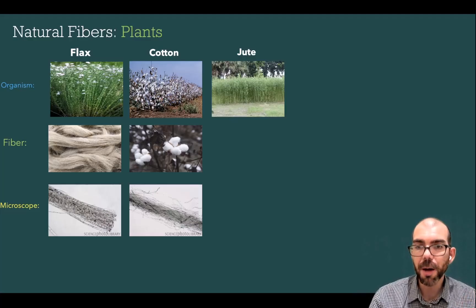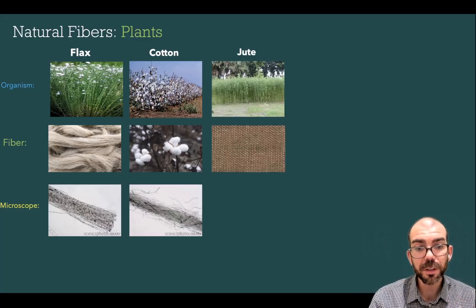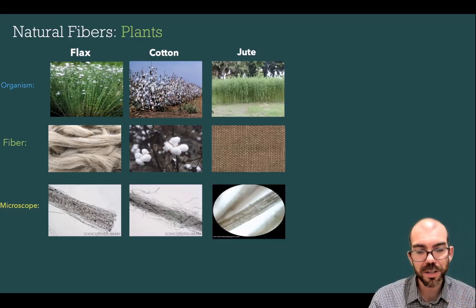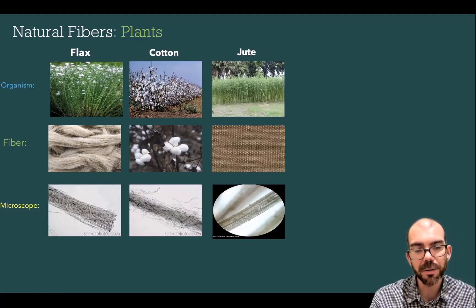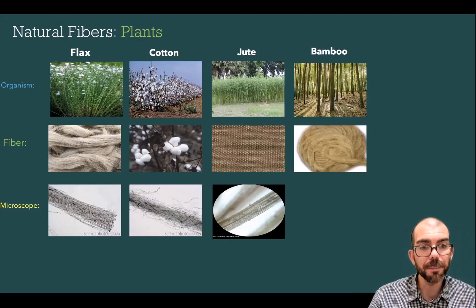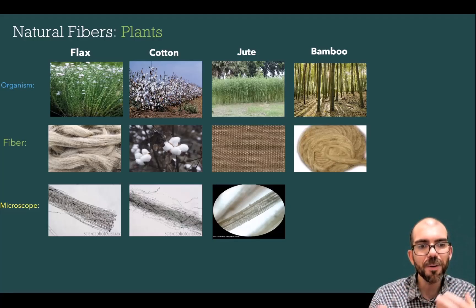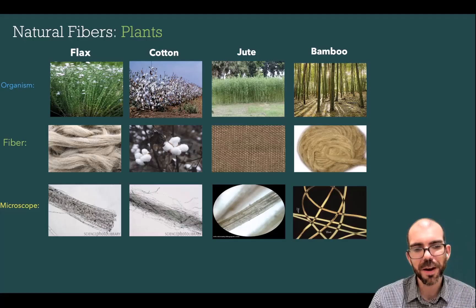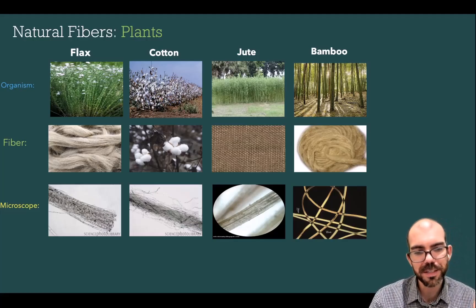Jute is another common plant used to manufacture textiles — it's what we use to make burlap. Under the microscope it's much more consistent and sturdier than flax or cotton, which makes sense given how sturdy burlap is. And then we have bamboo, which can be taken apart to make bamboo fibers. Under the microscope those fibers are somewhat flexible but you can see how sturdy they are.